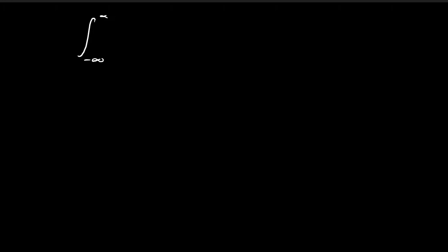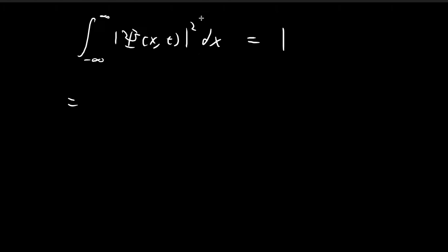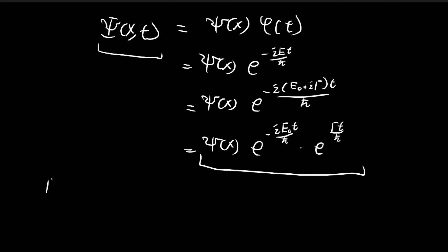The next thing we're going to consider is the normalization integral — the integral of the absolute value squared of the wave function, which we know should be equal to 1. We're going to evaluate this integral by substituting our expression for the wave function and taking its absolute value squared.